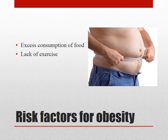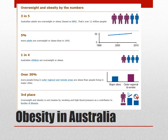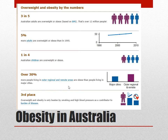Risk factors for obesity include excessive consumption of food and lack of exercise. In Australia, three in five adults are overweight or obese based on a BMI over 25 - that's 12 million people. There are 5% more adults overweight or obese than in 1995, showing we're increasing as a nation. One in four children is overweight or obese, which is very concerning. Thirty percent more people in regional or remote areas are overweight compared to city dwellers. Overweight and obesity is the third leading contributor of disease, just behind smoking and high blood pressure.